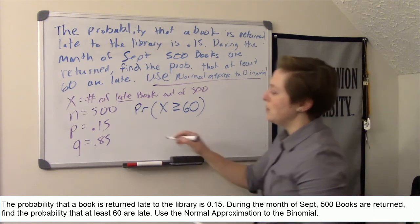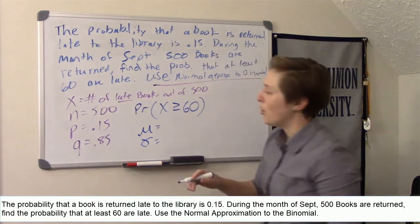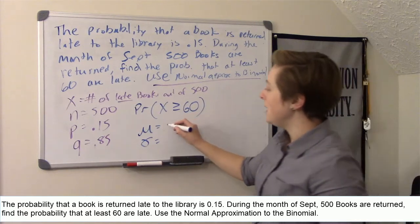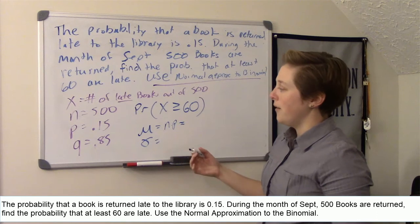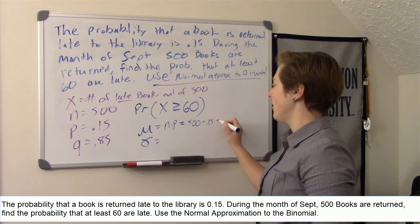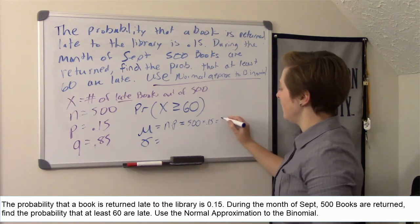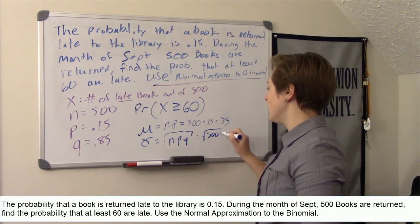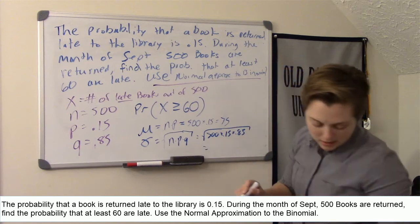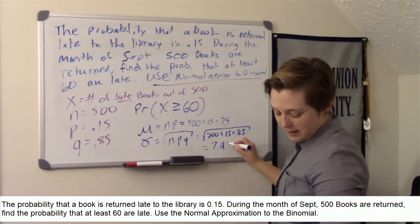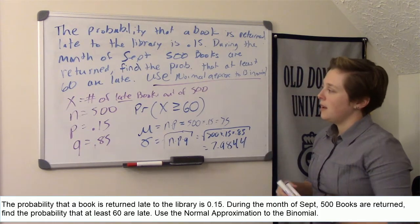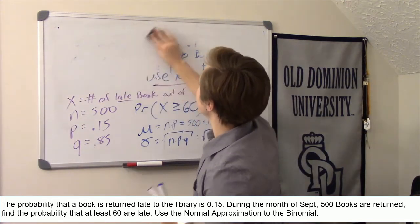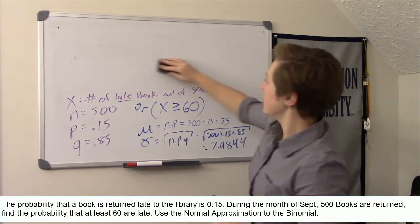Since I'm using the normal approximation, remember normal distributions have mu and sigma. So I need to find what is the mean of x and what is the standard deviation of x. Mean is n times p, so the expected number of late books will be 500 times 0.15, which is 75. Standard deviation is the square root of n times p times q, so square root of 500 times 0.15 times 0.85, which is 7.9844. I'm going to go ahead and erase this so I have more room on my board.